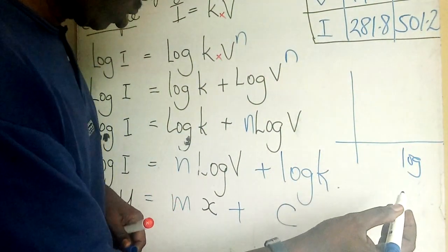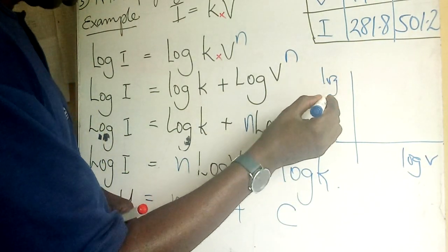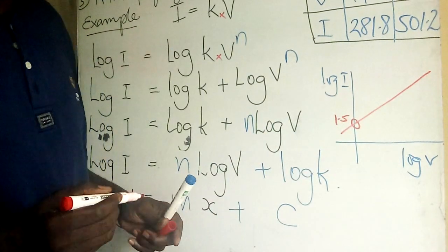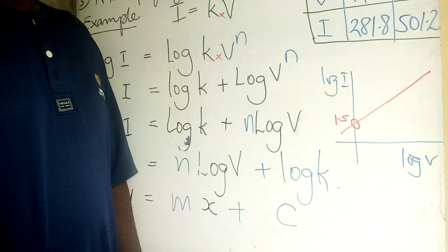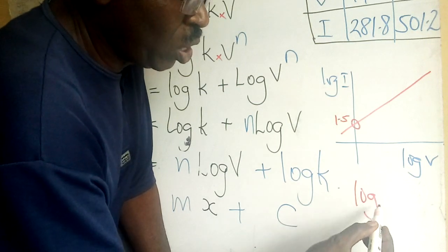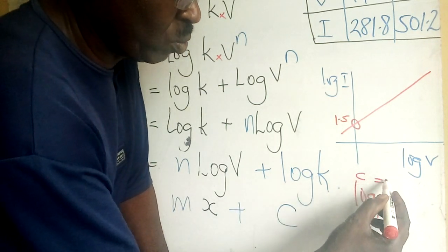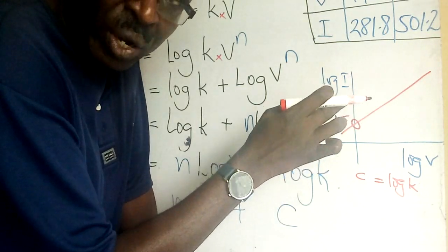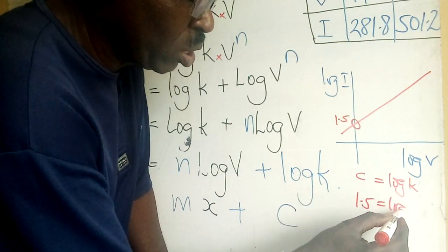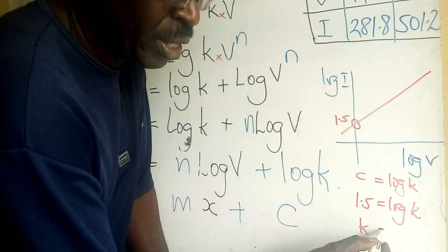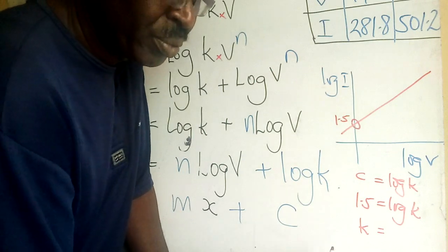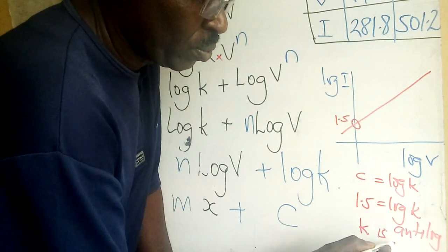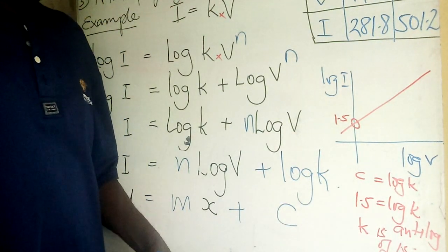Then log k = c, which is where the graph cuts the y-axis. So on the graph, we have log v on the x-axis and log i on the y-axis. Let us assume the graph cuts the y-axis at 1.5. Then c = log k, so 1.5 = log k. Therefore, k = antilog of 1.5.